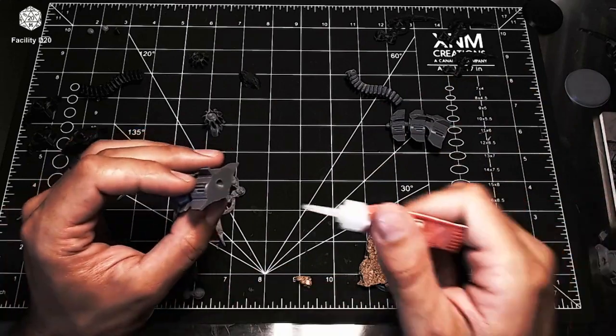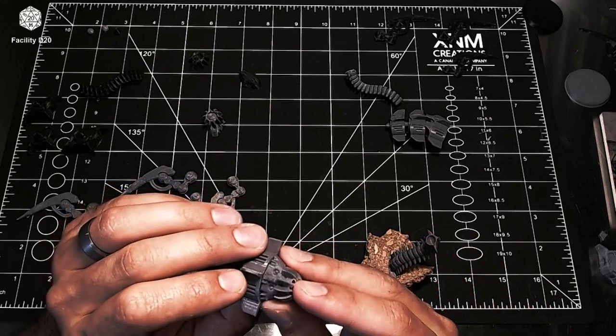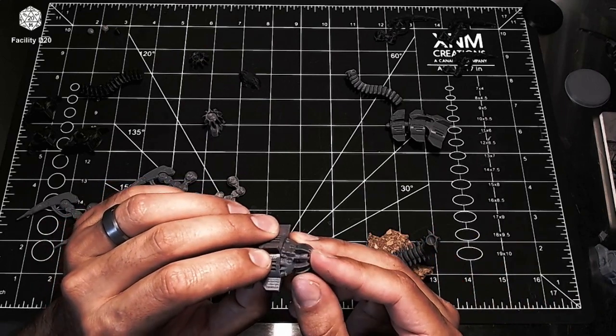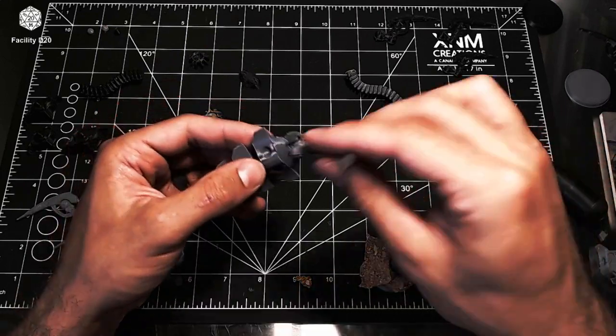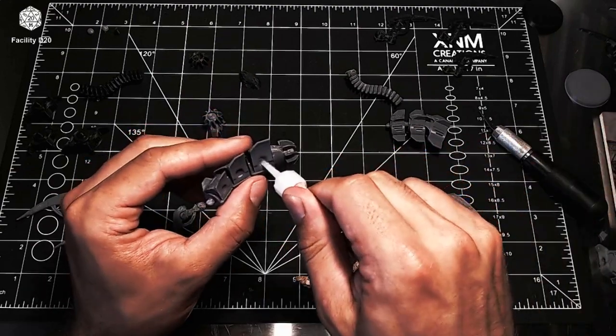Then I went ahead and put the neck section, for lack of a better word, and the head section together and stuck it on the top part of the model and started to glue in the talons.